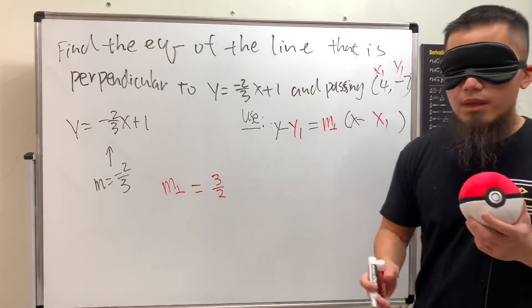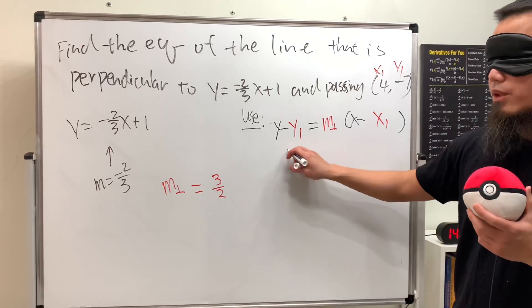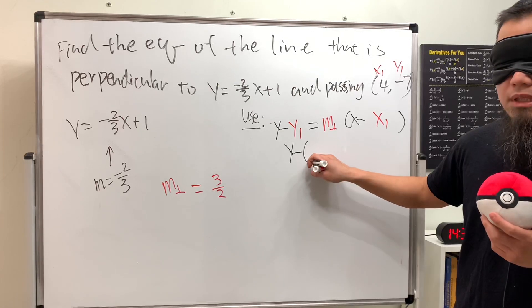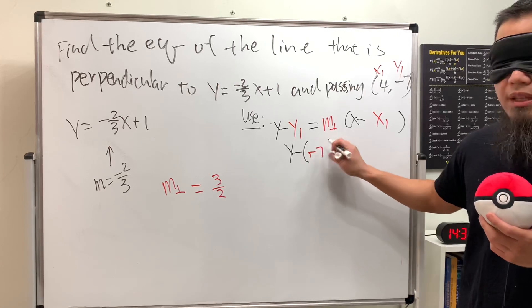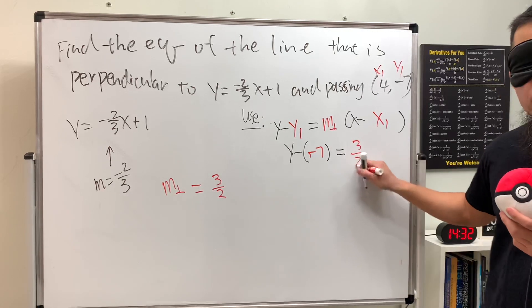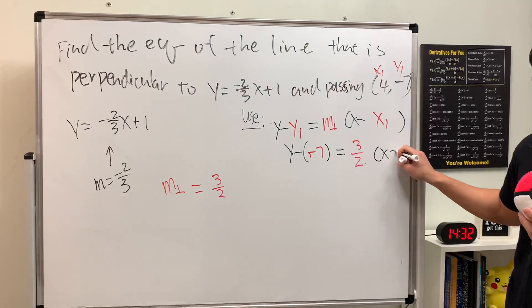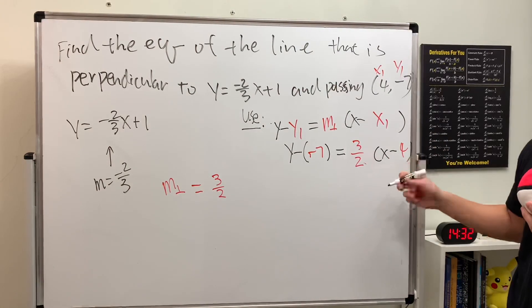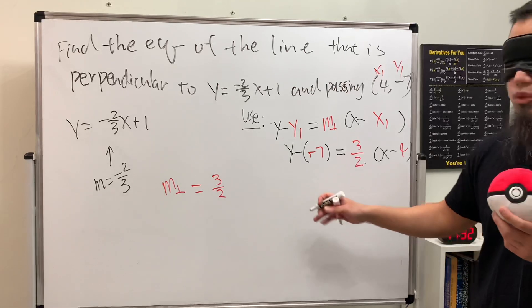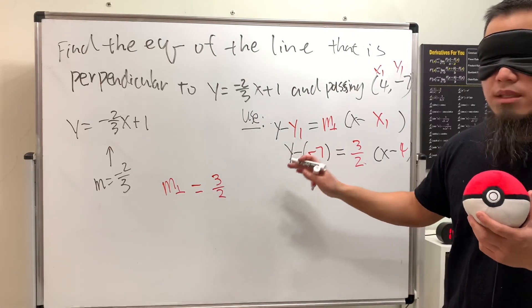Let's plug in the numbers. We have y minus y₁, which is negative seven, equals the slope three over two times x minus four. So y minus negative seven becomes y plus seven.